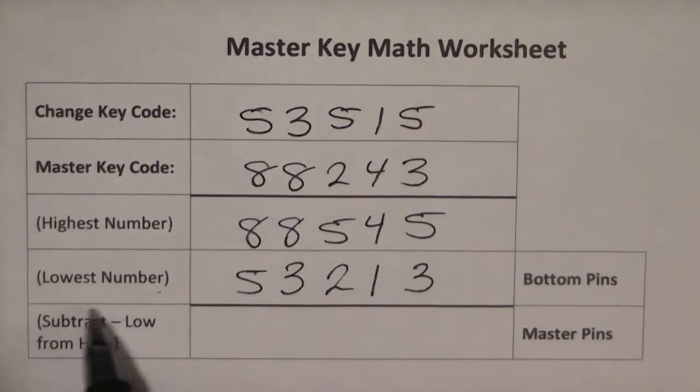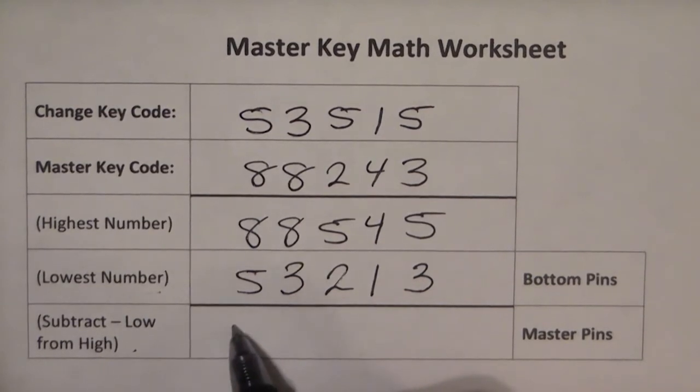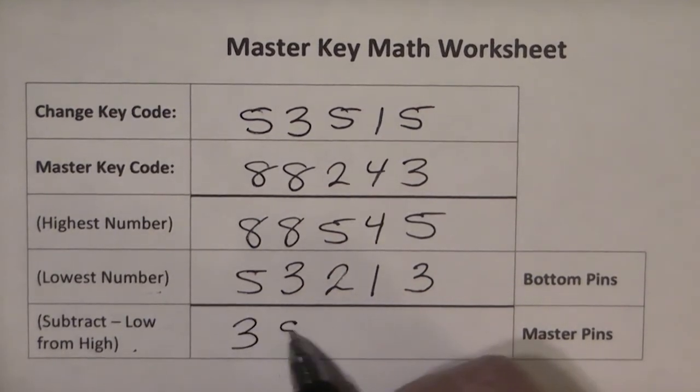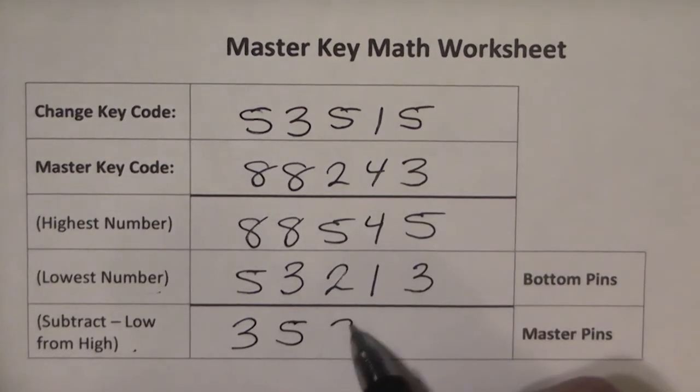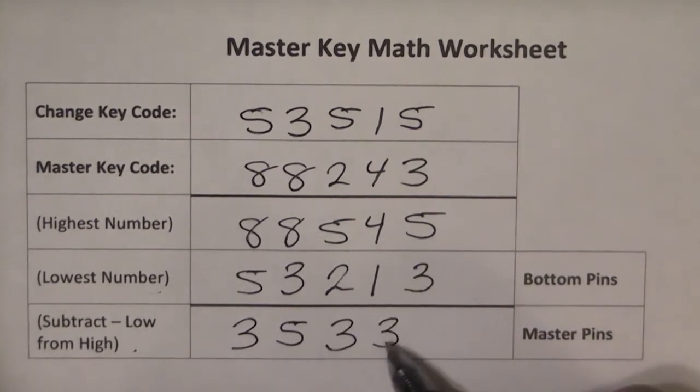The next step is to subtract the lowest number from the highest number. 5 from 8 is 3, 3 from 8 is 5, then 3, 3, and 2.